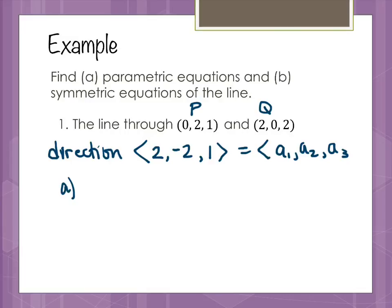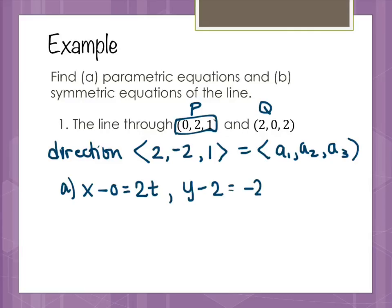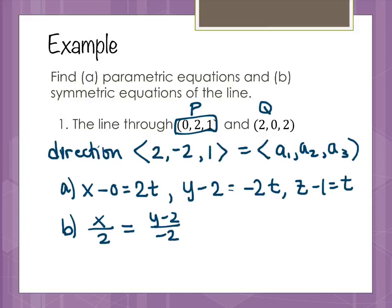For the parametric equations, we'll use the first point. We get x minus 0 equals 2t, y minus 2 equals negative 2t, and z minus 1 equals t. For the symmetric equations, we solve each for t and set them equal: x over 2 equals (y minus 2) over negative 2 equals (z minus 1) over 1. This is our symmetric equation for the line.